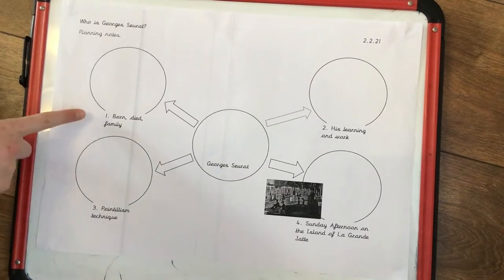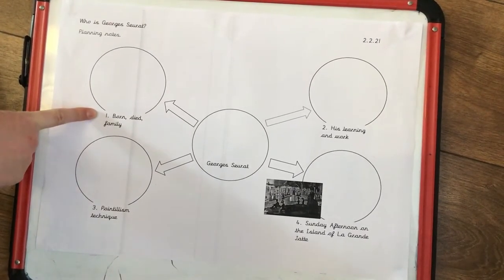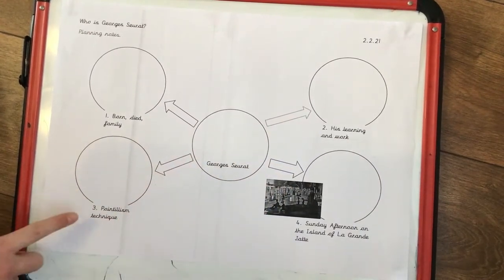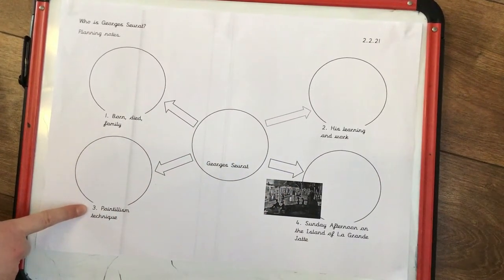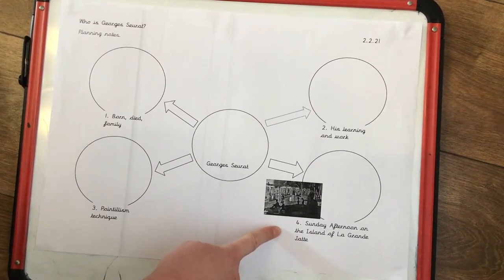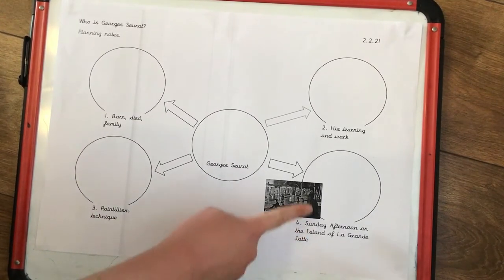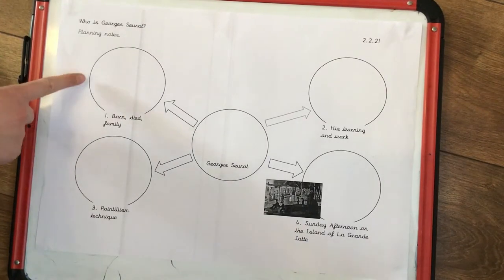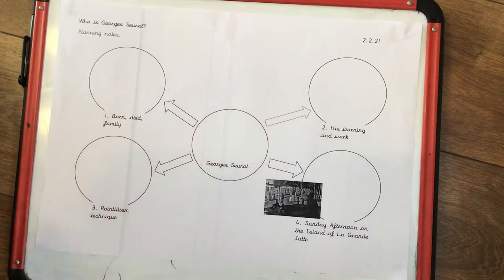So we've got number one: born, died, family. Number two: his learning and work. Number three: pointillism technique. Number four: Sunday afternoon — that's about his painting. So we've got the different sections so we can record the different facts in the right place to help us gather all the things that we're going to learn about Jean Seurat.